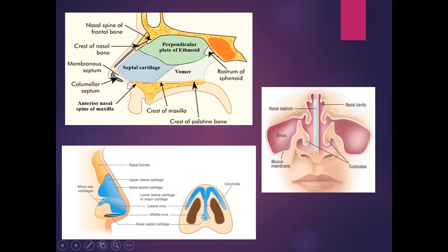There are several parts of the septum to be aware of. First, the columella, as shown in the top left and bottom left pictures — this is the most anterior and inferior part of the septum, comprising just soft tissue, so you can feel it on your own nose. Then the membranous septum, which is the narrow portion at the lower end of the nasal septum between the cartilaginous septum and the columella; it's freely mobile. Then the septum proper, which is an osteocartilaginous framework covered by the nasal mucous membrane.